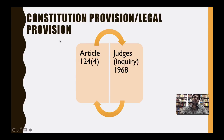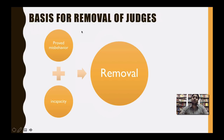The constitutional provision is Article 124, Section 4, which talks about the removal of Supreme Court judges. The legal provision is the Judges' Enquiry Act, 1968. The basis for removal of judges is proved misbehavior and incapacity. In our constitution, these two terms have not been defined — what conduct or decision of a Supreme Court judge will be considered as proved misbehavior or incapacity.